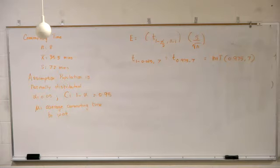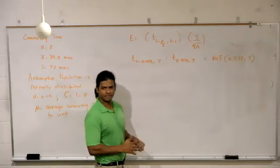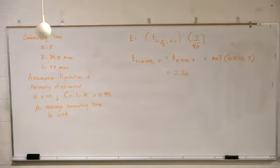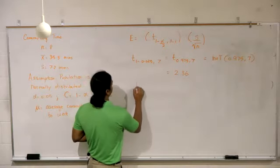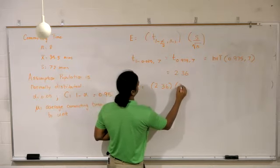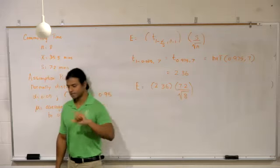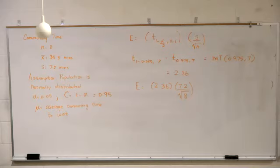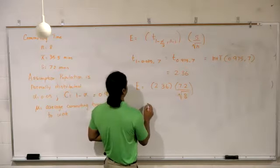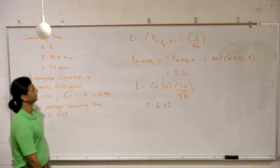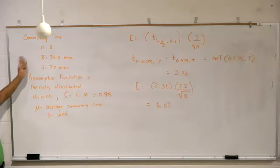Inverse T of 0.975 with 7 degrees of freedom gives us 2.36. All we have to do is plug in the standard deviation, 7.2, divide by square root of 8, which is the sample size. The margin of error is 6.02. We have the margin of error, we have x bar.